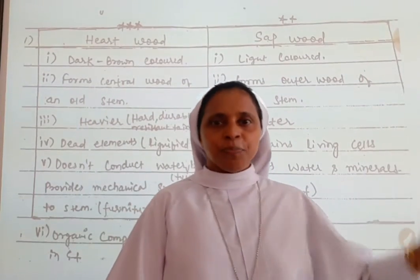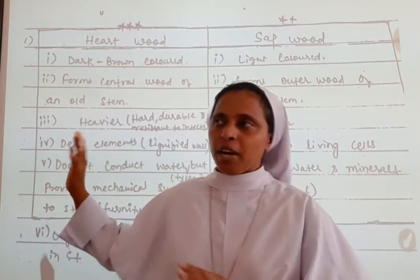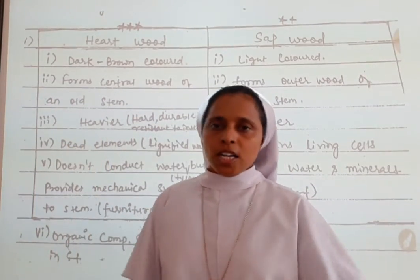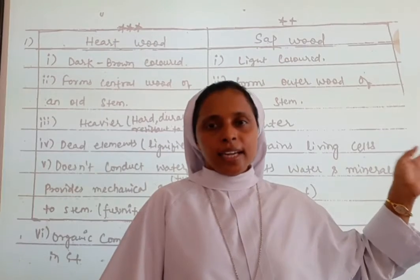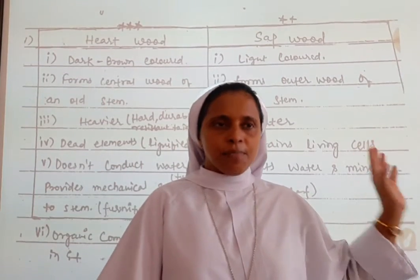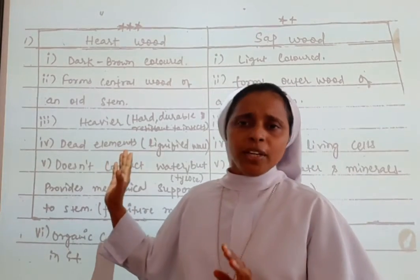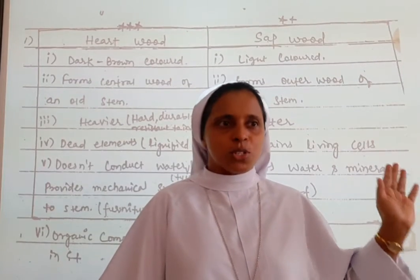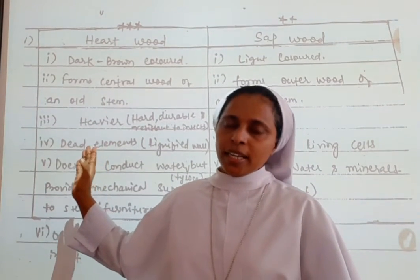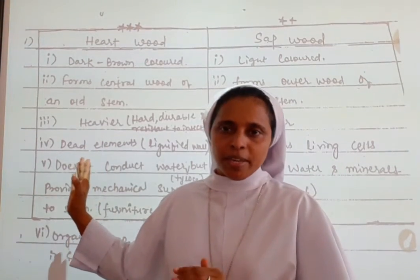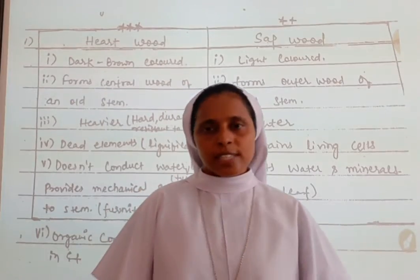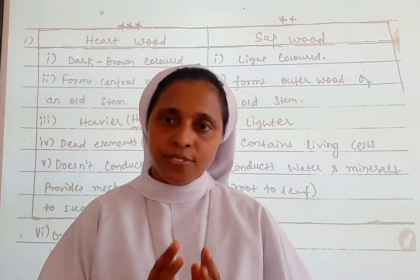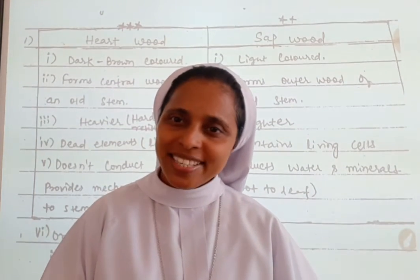Sapwood contains living cells while hardwood contains dead elements due to lignification. Lignified cells are found in hardwood. Sapwood conducts water and minerals from the wood to the leaf, while hardwood provides mechanical support and is used to make furniture. Organic compositions are deposited in hardwood. The differences between hardwood and sapwood are now clear.